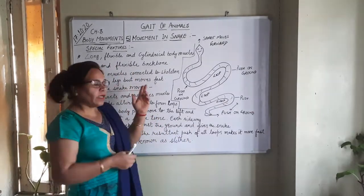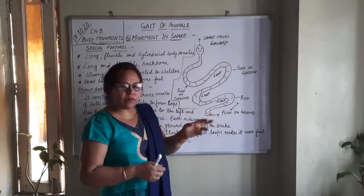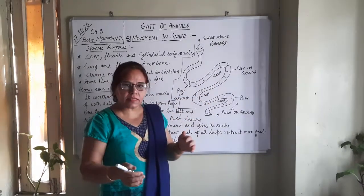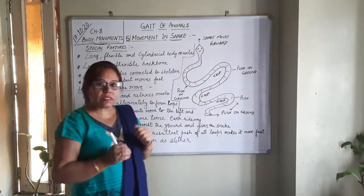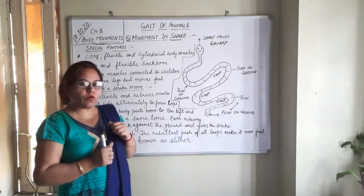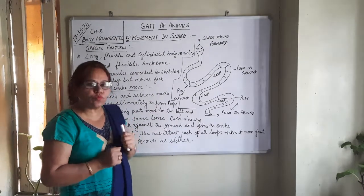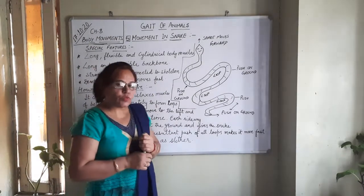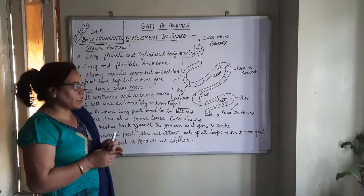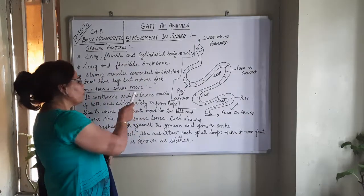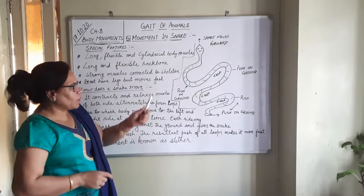If you look at the whole body, it is cylindrical but without legs. It does not have legs, but still if you observe its movement, it moves very fast. So now the question arises: how does the snake move? Let's discuss this.